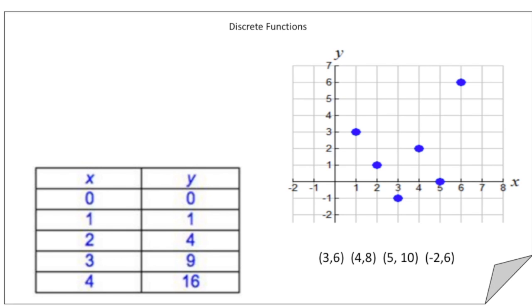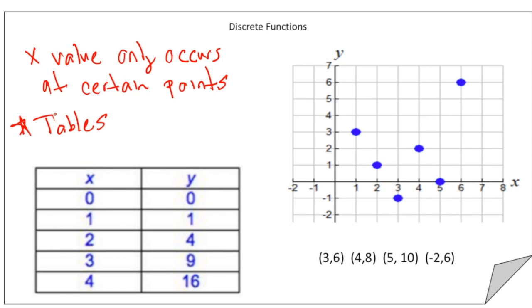So now let's take a look at the next page of your notes. And now we're going to talk about discrete functions. Notice how this graph appears to be quite different than the graph on the previous page. So what's the difference between discrete functions and continuous functions? So discrete functions, the x value only occurs at certain points. And really any table normally shows the values of discrete functions.